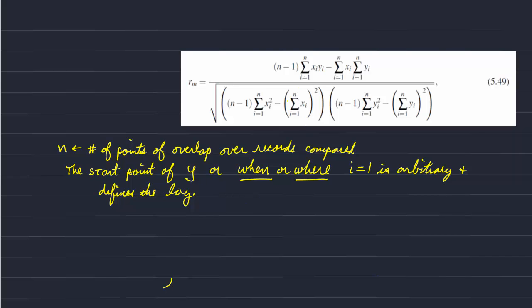So the equation looks very similar to the one that I drew out. The sum is from 1 to n where 1 to n represents the band in the record where the overlap is occurring. And the start point of y is defined by the lag. So each time you compute r for a different lag you have to redefine what i equals 1 is for y. And so this is the equation for the general case for cross correlation.